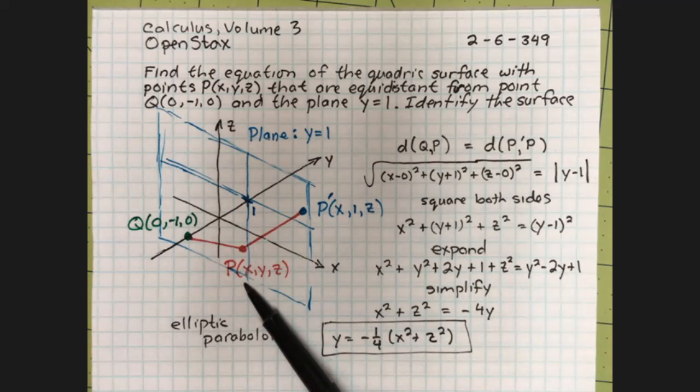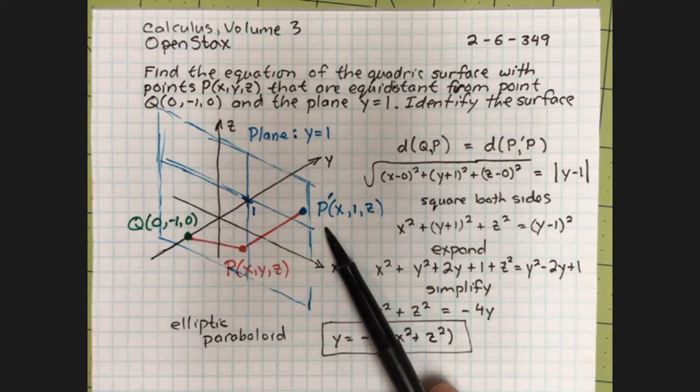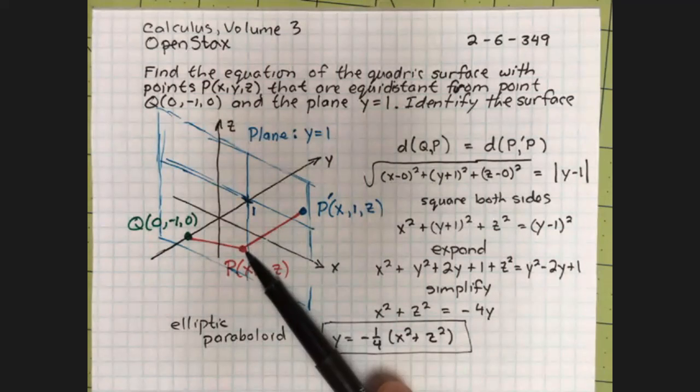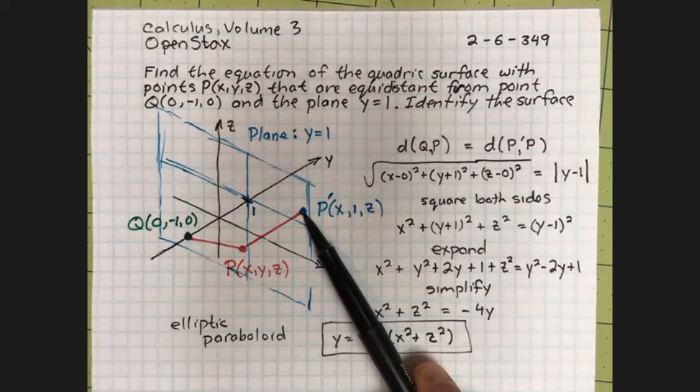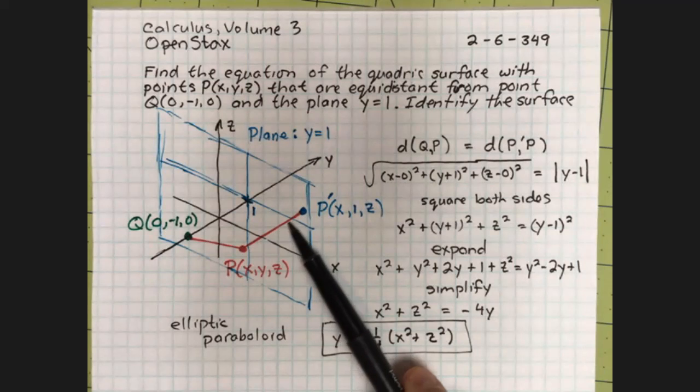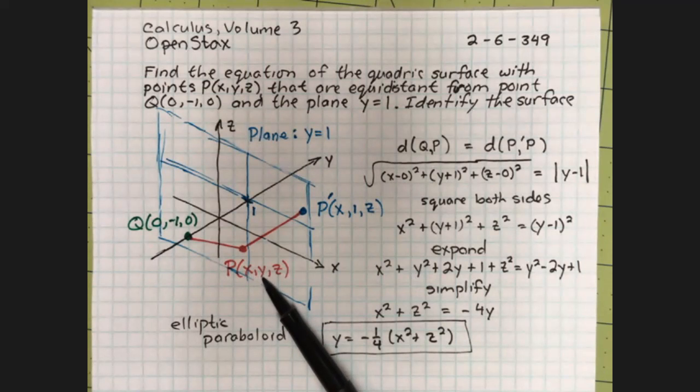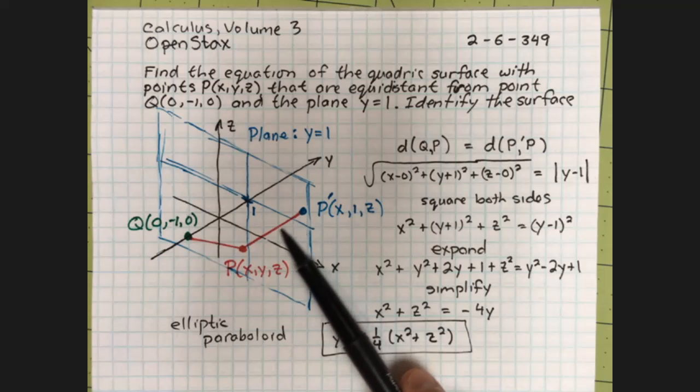But the distance from this point to the plane Y equals 1, well, the shortest distance is straight along, parallel to the Y axis, along this line, perpendicular to the plane Y equals 1. If X and Z remain the same, we move from Y to 1. Well, this distance is Y minus 1.